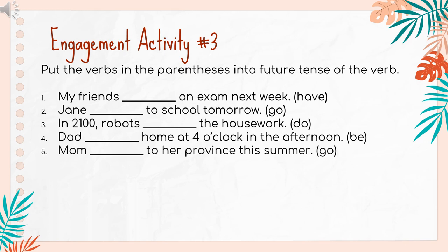Engagement activity number three. Put the verbs in parentheses into future tense of the verb. Number one: My friends blank an exam next week. The verb is "have". Number two: Jane blank to school tomorrow. The verb is "go". Number three: In the 2100s, robots blank the housework. The verb is "do". Number four: Dad blank home at four o'clock in the afternoon. The verb is "be". Number five: Mom blank to her province this summer. The verb is "go".